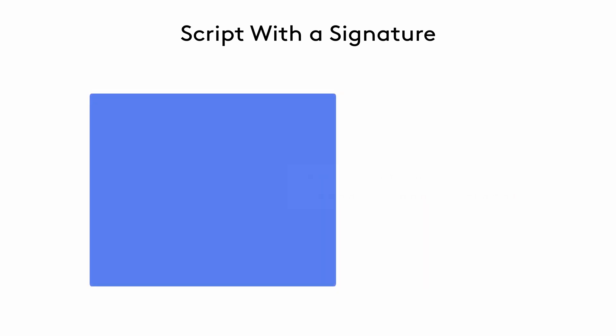Let's take a moment to look at how create and exercise are used in a template versus a script. The create command is analogous to the create statement used inside a choice body. Similarly, when we exercise a choice on a contract in our test script, we use exerciseCMD. The version with the CMD suffix is always used on the client side to build up the list of commands on the ledger, while the ones without the suffix are used within choices and are executed directly on the server.